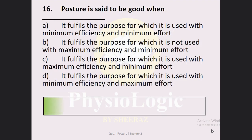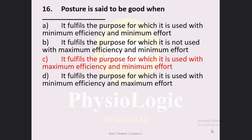The posture is said to be good when: Option A — it fulfills the purpose for which it is used with minimum efficiency and minimum effort. Option B — it fulfills the purpose for which it is not used with maximum efficiency and minimum effort. Option C — it fulfills the purpose for which it is used with maximum efficiency and minimum effort. Option D — it fulfills the purpose for which it is used with minimum efficiency and maximum effort. The correct option is Option C.